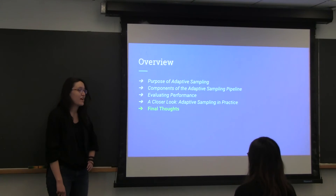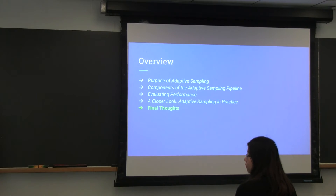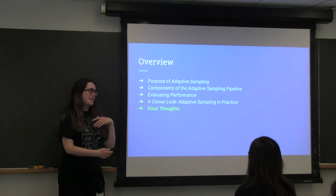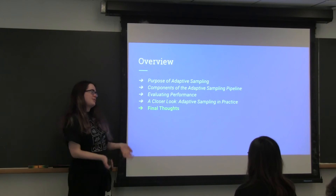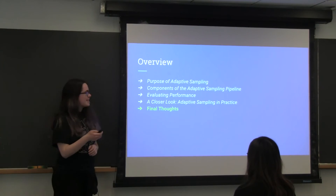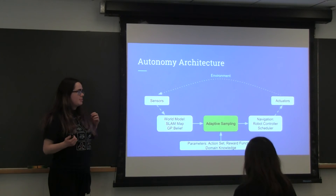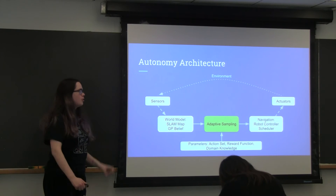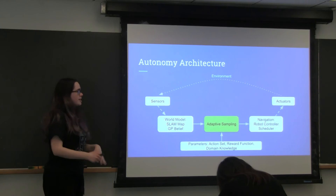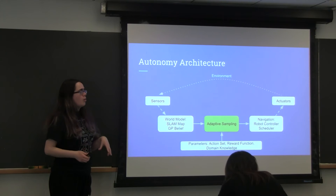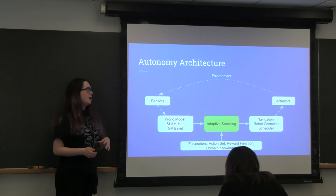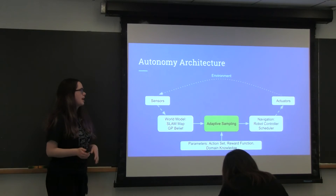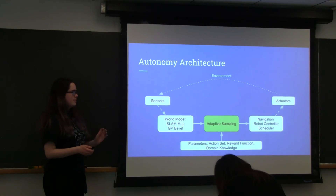Katie is going to give some final thoughts about the whole adaptive sampling thing. So I'll wrap up and summarize some key points. Adaptive sampling fits into the overall pipeline: you sense the environment, make a world model like a SLAM map or GP belief, plan out different things you can do within that model, pick the best action, pass it into a path planner, and execute. That's where adaptive sampling fits in this whole process.